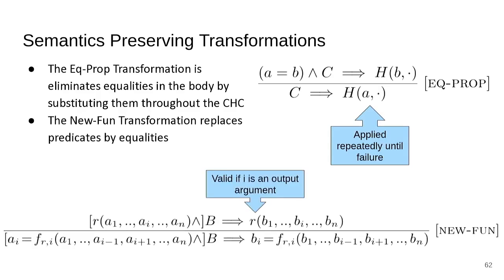The second transformation is the new-fun transformation. This transforms one of our predicate symbols into a corresponding equality with a function symbol. If you specify an argument i, it moves the i-th argument to the left-hand side of the equality, removes it from the body of the application, and substitutes a new function. This rewrite rule is valid if and only if i is in fact an output argument.